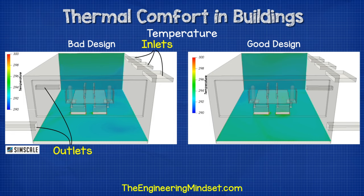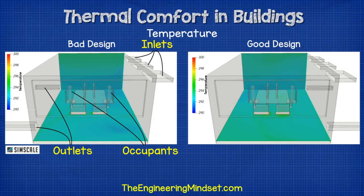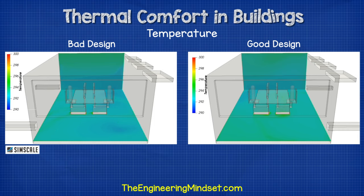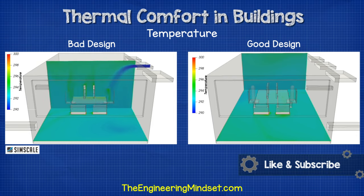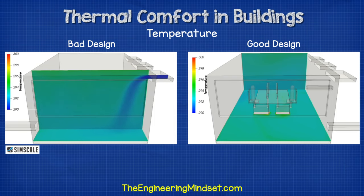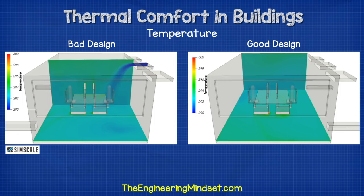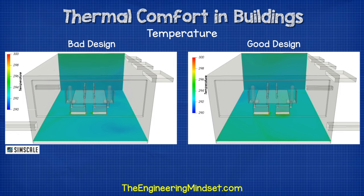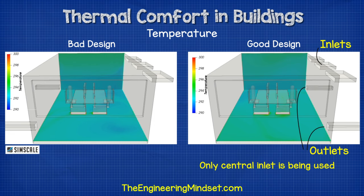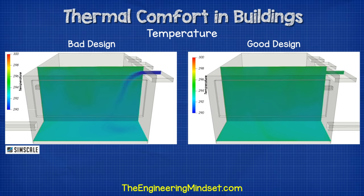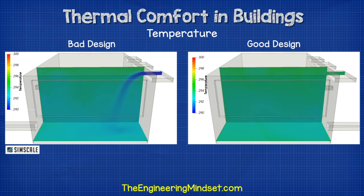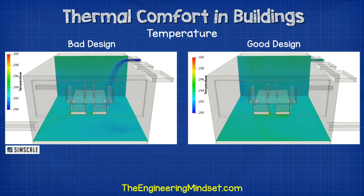If we compare two office designs for temperature distribution: the first room has three inlets at the top right with two outlets at the bottom left. The occupants are sitting at desks in the center of the room, represented by cylinders. As we look at the temperature of the air, we can see that cold air is pouring out of the inlets and the central grill is discharging directly onto an occupant — clearly a bad design. In the improved design, the outlets have been moved under the inlets and only the central duct is used. The distribution is now spread across the upper regions of the room, giving a more stable and equal environment. Both occupants now experience the same conditions.